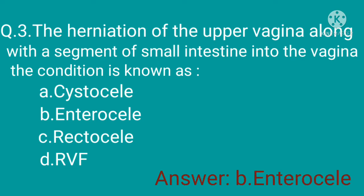Enterocele is a small bowel prolapse. It occurs when the small intestine descends into the lower pelvic cavity and pushes at the top part of the vagina, creating a bulge. Cystocele is also called bladder hernia; it can result from severe constipation, violent coughing, heavy lifting, or other pelvic muscle strain.